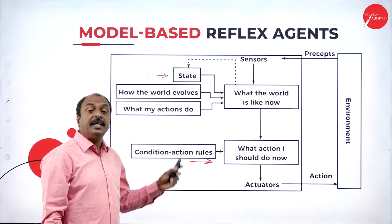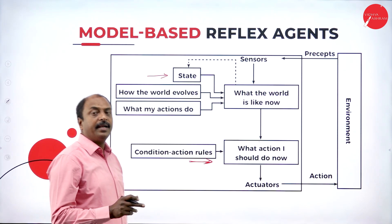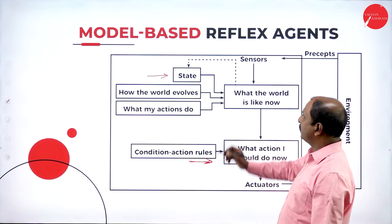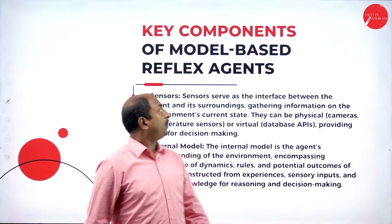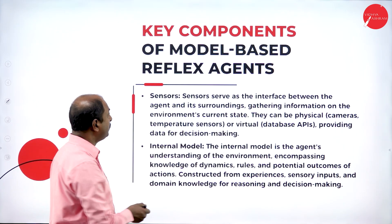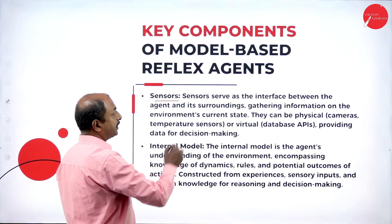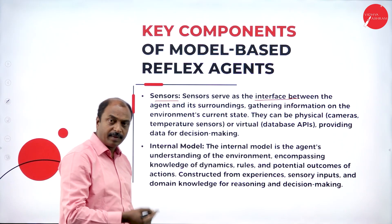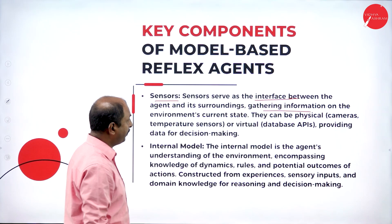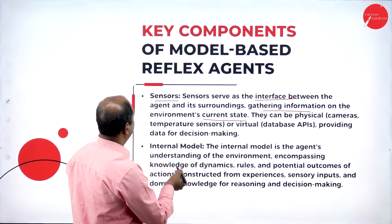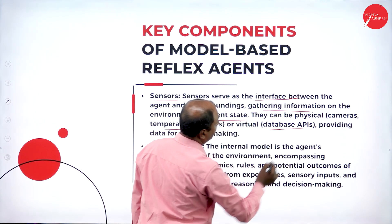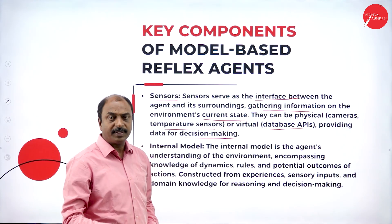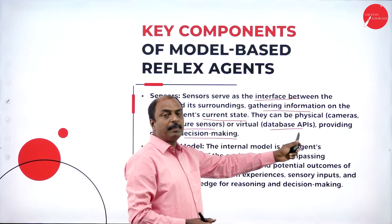In model based reflex agent, it has predefined models for the environment, or it has different types of algorithms or models for different types of percepts of the environment. Now let us see the different components. One is sensors — that is going to perceive the environment, meaning it gathers information, acting as the interface between the agent and the surroundings. It gathers information based on the current state, and this can be physical temperature sensors or virtual means like database APIs providing data for decision making.